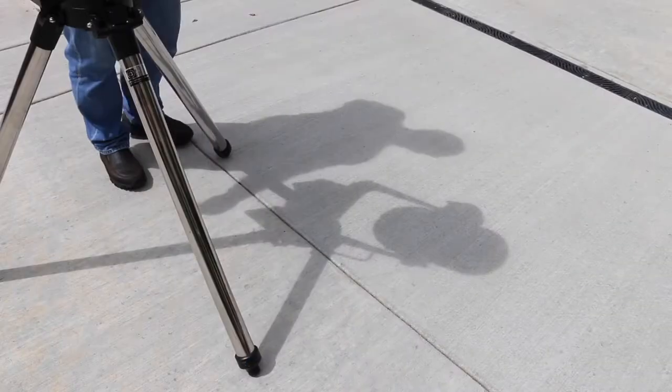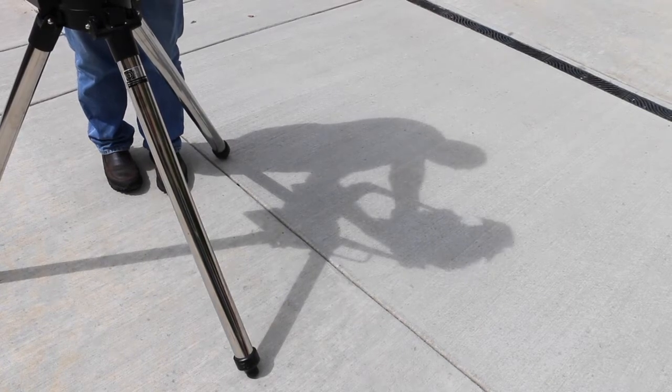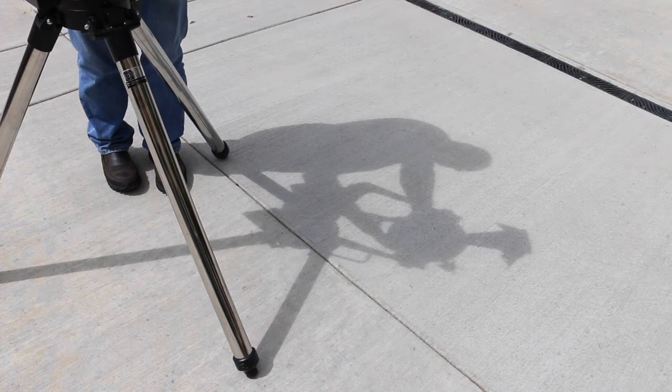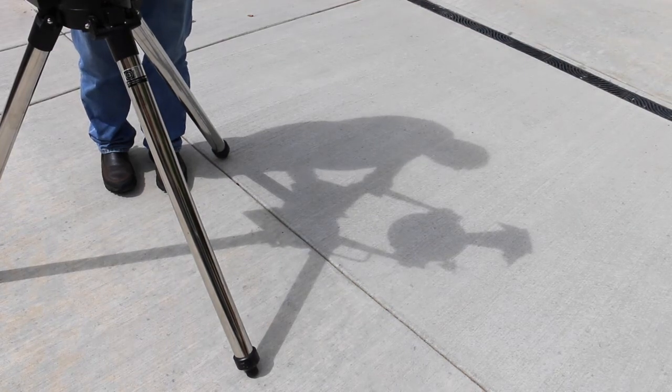How do you aim a telescope when you're not supposed to look through it and when you're supposed to keep the finder scope covered? Well, one solution is to watch your telescope shadow on the ground and adjust the aim until the tube shadow is as small and round as you can get it. Then you'll be pretty certain that your scope is pointed right at the sun.